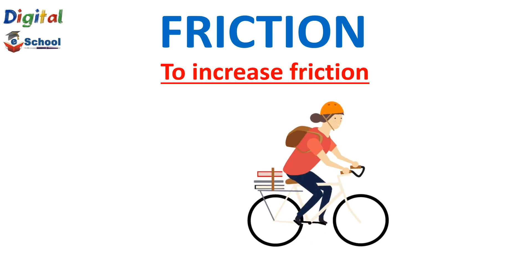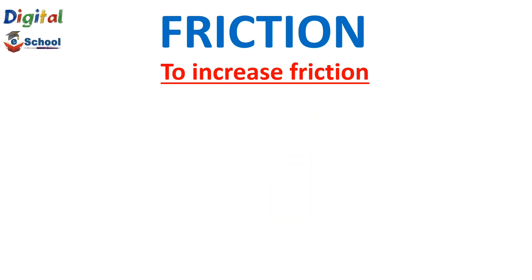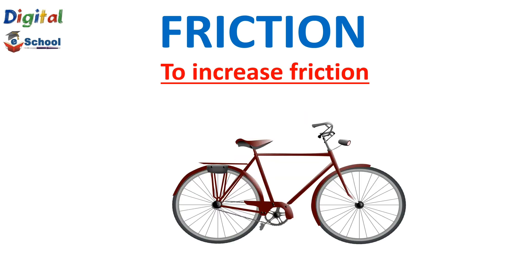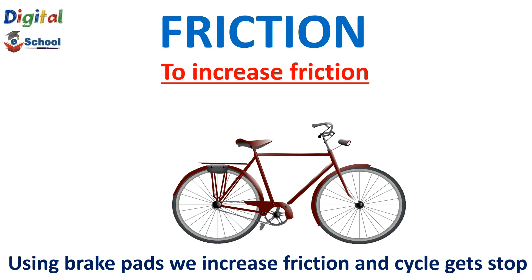When you use a bicycle or automobile and are moving, the brake pads don't touch the wheel. But when you press the brake lever, the pads press against the rim and arrest its motion because of friction. As a result, the brake pads stop the wheel — the wheel stops moving. So by increasing friction using brake pads, any automobile or bicycle gets stopped.